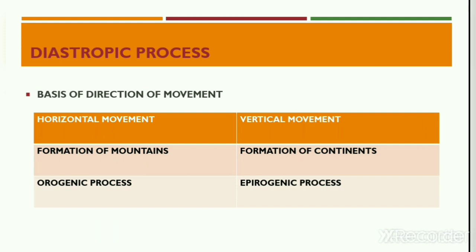The diastrophic process can also be divided into two types on the basis of direction: horizontal movements and vertical movements. Horizontal movements are those diastrophic processes that relate to the origin of mountains, and therefore are also termed as orogenic processes. The word orogeny has been derived from the Greek words oro and genis, meaning mountain and origin respectively.